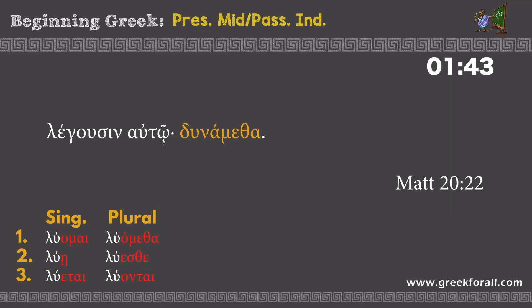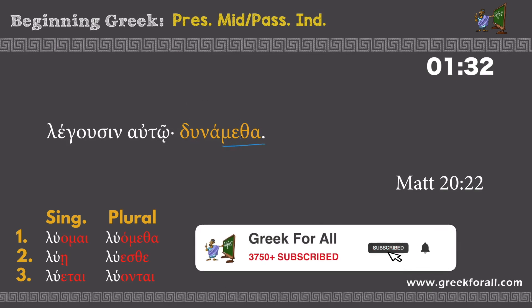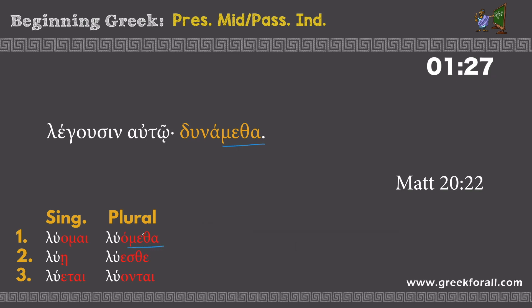'Legousin autō: dunametha.' 'They say to him: dunametha.' One-word sentence — again, there is no subject. We look at the ending, which is '-metha,' and find it in the paradigm as first person plural. So we draw the subject 'we' from the verb. Translation: 'They say to him: we can' or 'we are able.' From 'dunamai': 'I can' or 'I am able.' So: 'we are able' or 'we can.'